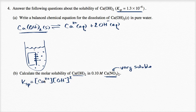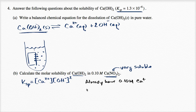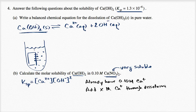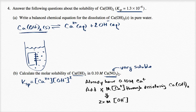How do we use this? We already have 0.10 molar calcium ions dissolved in solution. We are going to add x molar calcium ions through dissolving the calcium hydroxide. That means we would have a 2x molar concentration of hydroxide, because for every calcium ion added you get twice as many hydroxide ions.